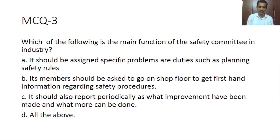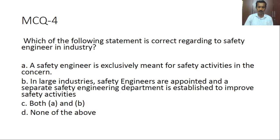Which of the following is the main function of a safety committee in industry? The committee should assign specific problems or duties such as planning safety rules, members should go to the shop floor to get first-hand information regarding safety procedures, and it should report periodically on what improvements have been made and what more can be done. The answer is D — all of the above are main functions of the safety committee.